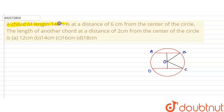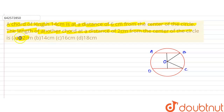A chord of length 14 centimeters is at a distance of 6 centimeters from the center of the circle. The length of another chord at a distance of 2 centimeters from the center of the circle is given by: option A 12 centimeters, option B 14 centimeters, option C 16 centimeters, and option D 18 centimeters.